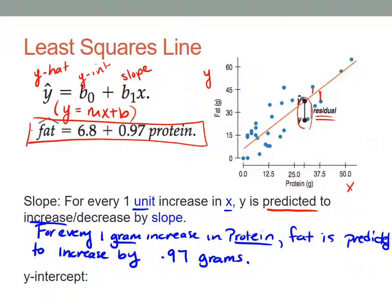Really all we can say is when protein is 0, fat is 6.8 grams. So it's really your starting point for fat. It's not that interesting most often to talk about but occasionally find some meaning.